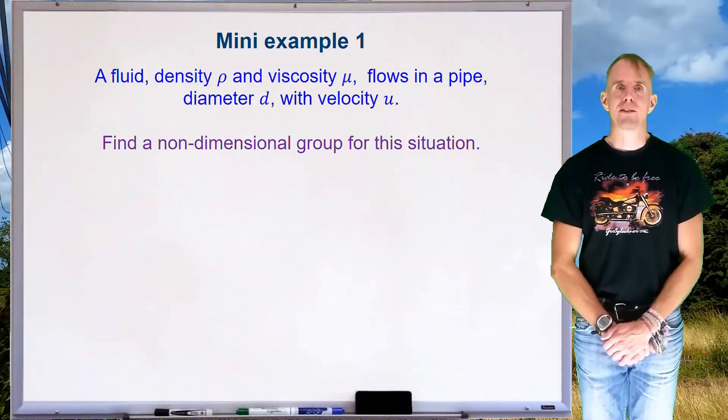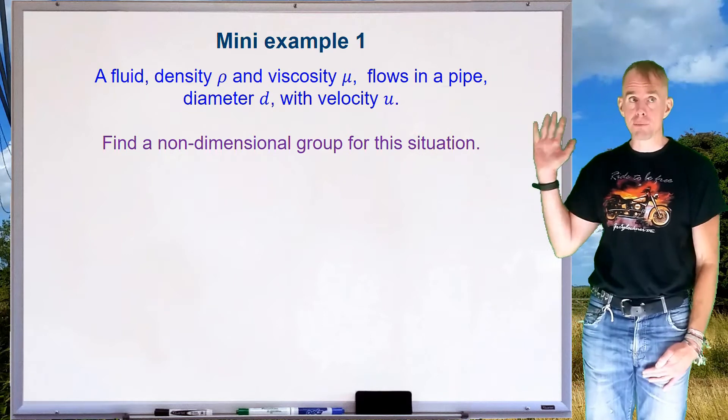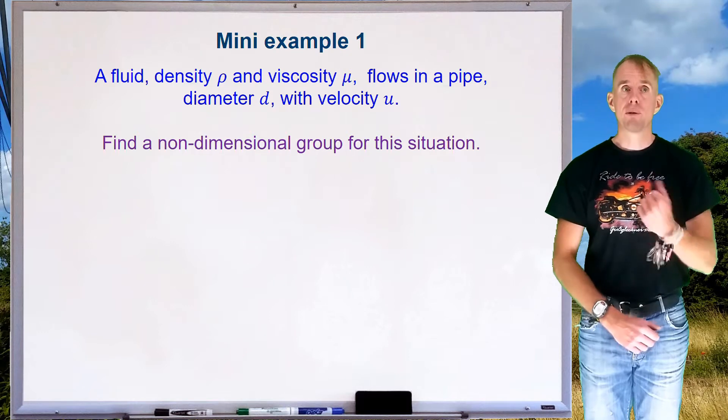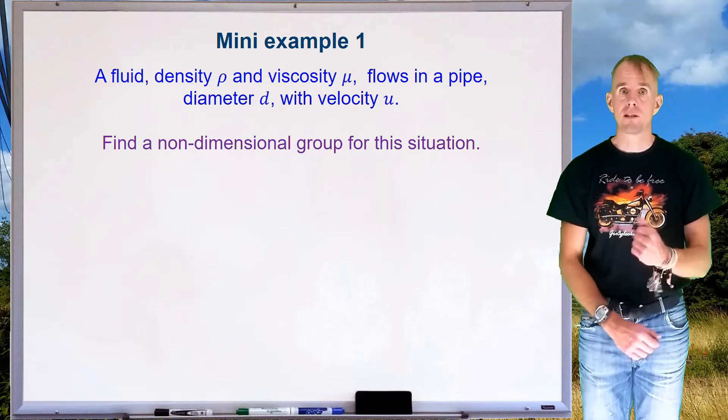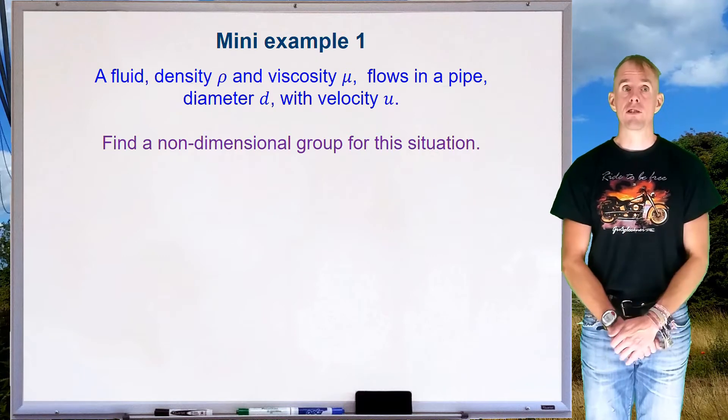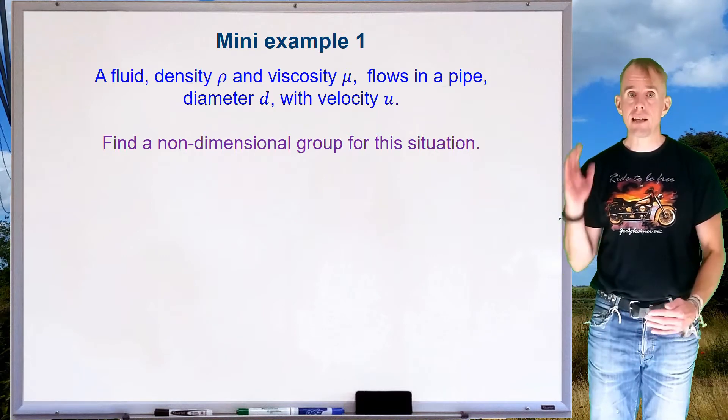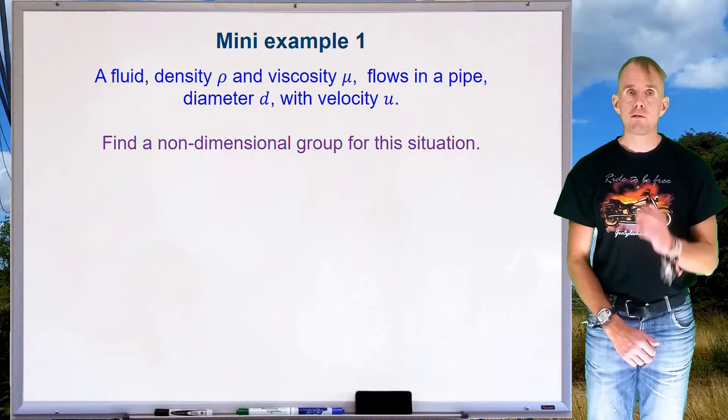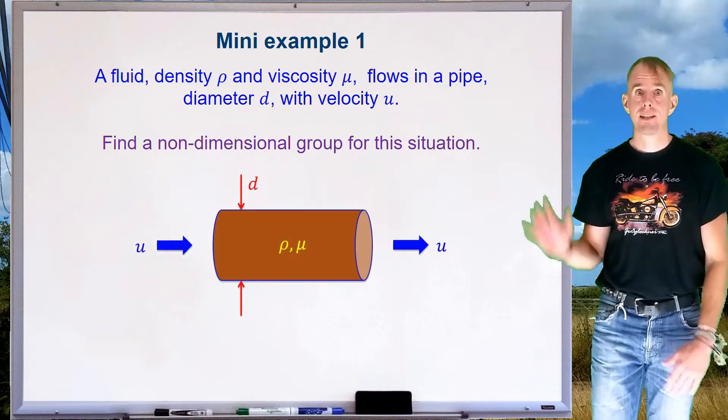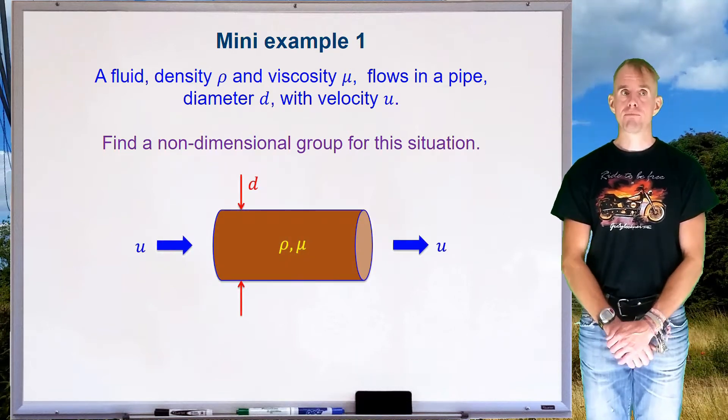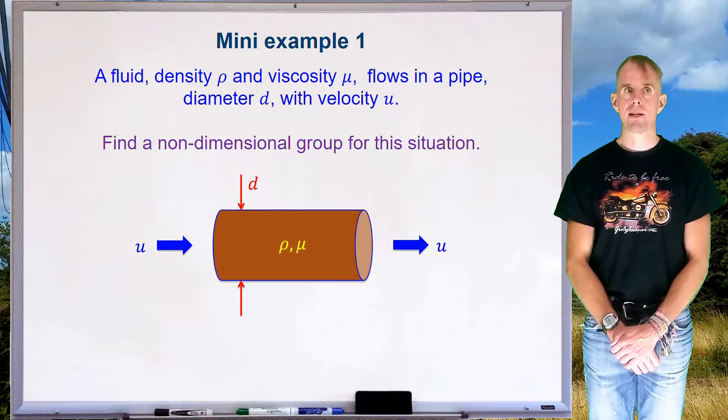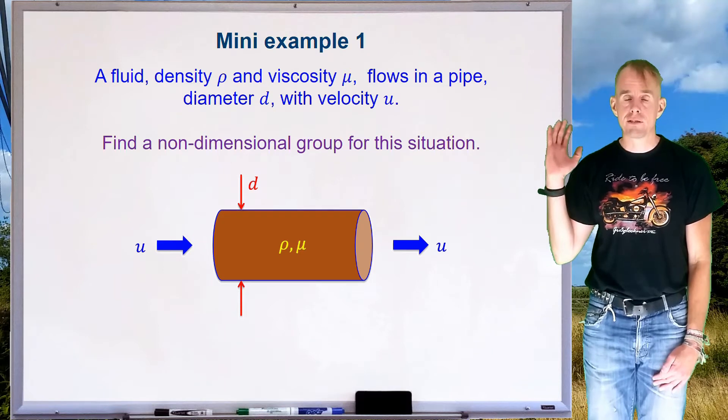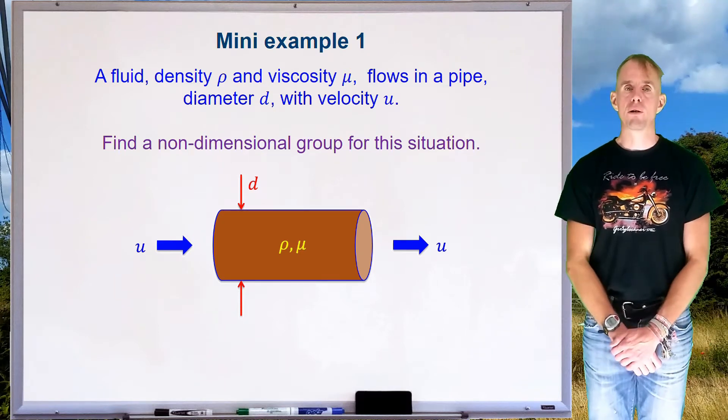So let's start off by looking at mini-example 1. Here on the whiteboard, I've got a problem description for you. We have a fluid flowing through a pipe. Our fluid takes a density ρ and a viscosity μ. The pipe takes a diameter d, and the fluid flows at a velocity u. Let's say what we want to do is find the non-dimensional group for this situation. The first piece of advice I would give you is draw a diagram. Here on the whiteboard is a diagram of the problem. There's our pipe, shown in brown. It has a diameter d, there's the fluid velocity u, and the velocity taking a density and a viscosity, ρ and μ, respectively.